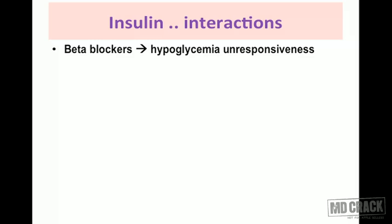Additionally, hypoglycemia stimulates adrenergic receptors — specifically beta-2 receptors — in the liver, triggering glycogen breakdown and releasing glucose into systemic circulation. So normally, two mechanisms work together: the patient gets warning symptoms and the body corrects hypoglycemia via hepatic glycogen breakdown, restoring blood glucose levels.